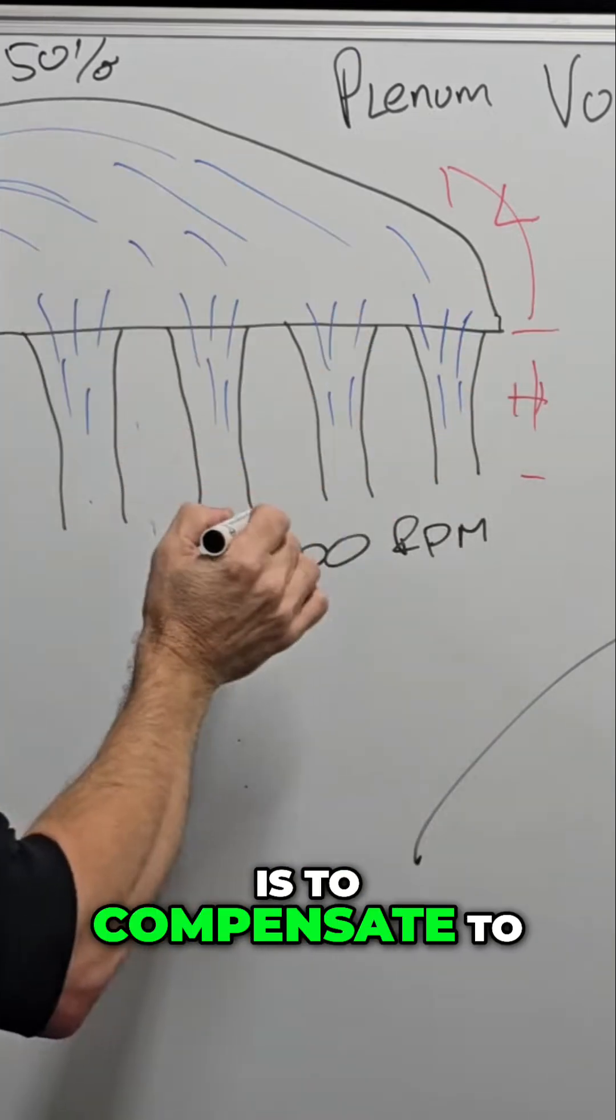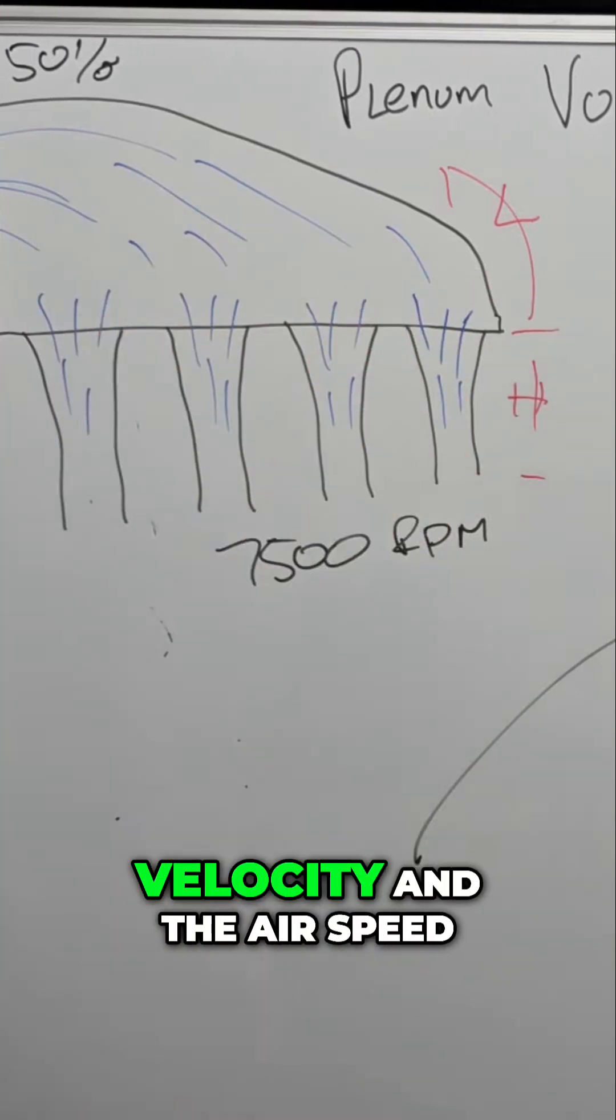And then the taper is to compensate, to try and balance the velocity in the airspeed.